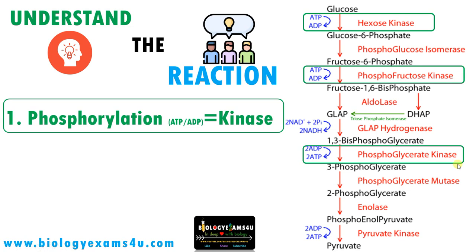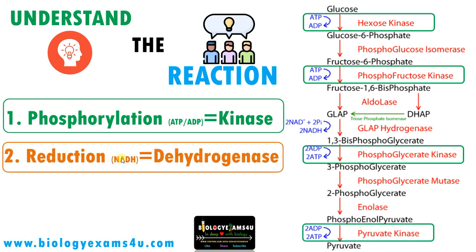Let me conclude point number one: in any pathway or any reaction, whenever there is phosphorylation or dephosphorylation, the enzyme is kinase. Point number two: whenever there is reduction — formation of NADH — the enzyme is dehydrogenase. Here, glyceraldehyde 3-phosphate becomes 1,3-bisphosphoglyceric acid. NADH is formed, therefore the enzyme is dehydrogenase — called glyceraldehyde 3-phosphate dehydrogenase, just prefixing the name of the substrate. Whenever there is a reduction reaction where NADH is involved, the enzyme is dehydrogenase.